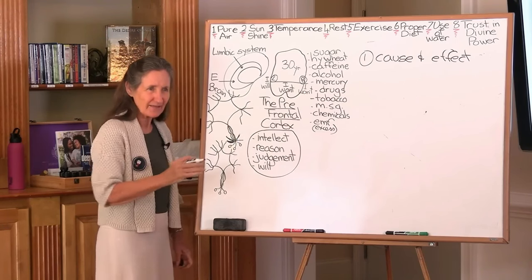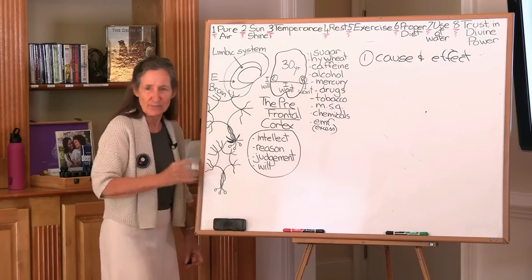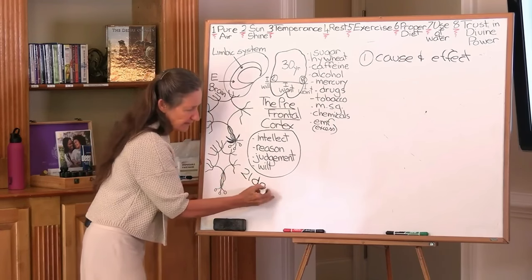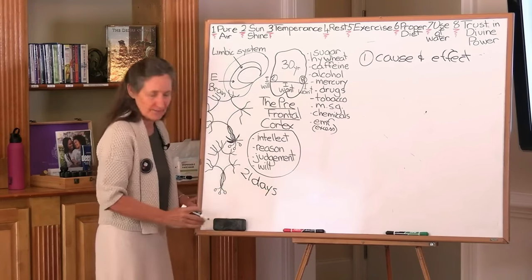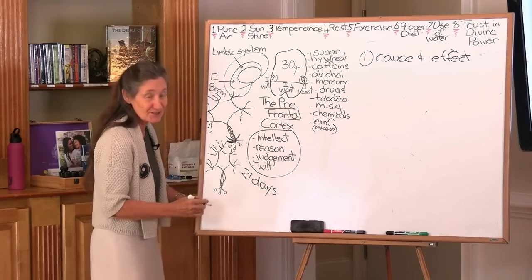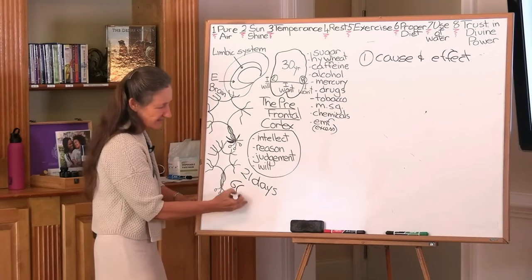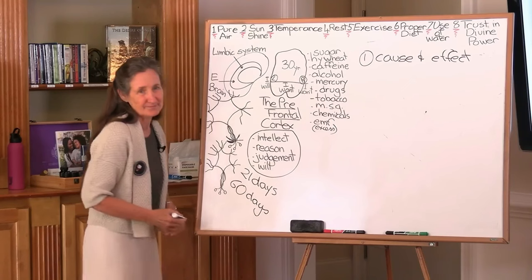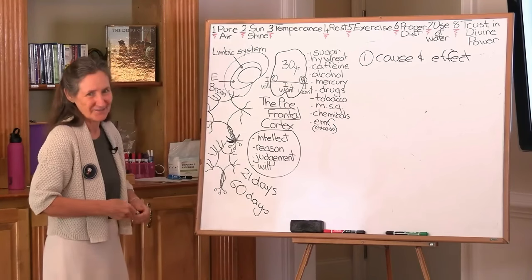How long does it take? How long does it take to grow that new pathway? 21 days. 21 days to make that pathway solid. How long does it take before you're in automatic? 60. 60 days and it's in cement.